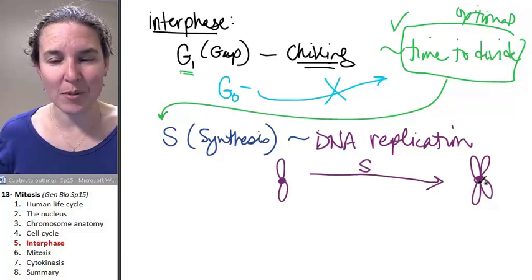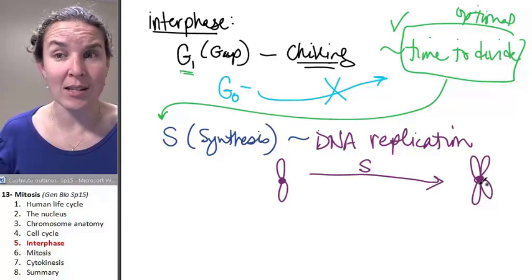We haven't doubled the number of chromosomes because remember, sisters are joined at one centromere.